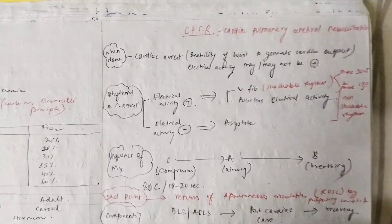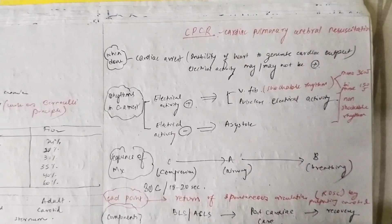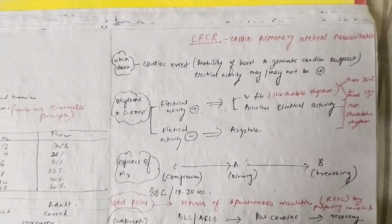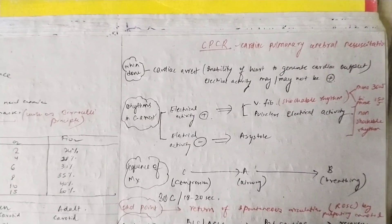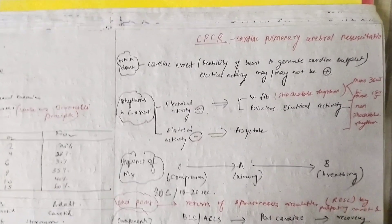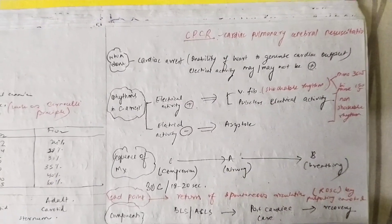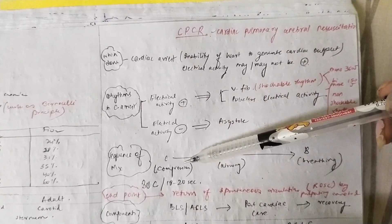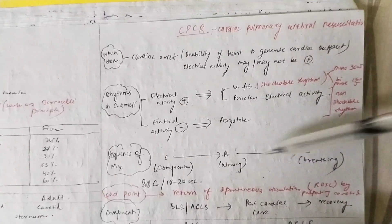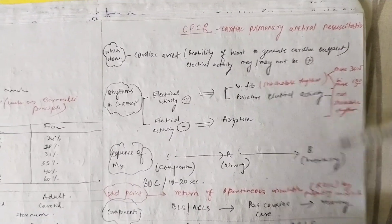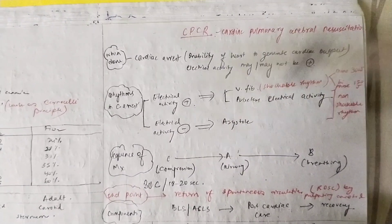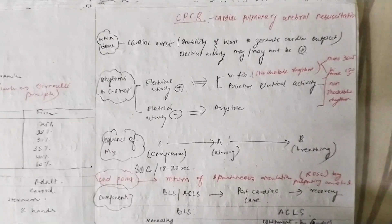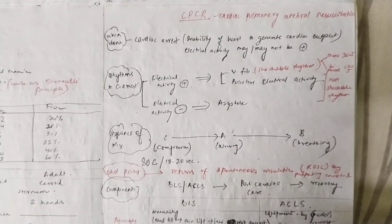What is the sequence of CPCR? You might have heard about A, B, C, D, E — these are the five components of CPCR — but the sequence is C, A, B. That means first is cardiac activity, which means compressions; then airway; then breathing. I will tell you about this in detail in a few minutes.